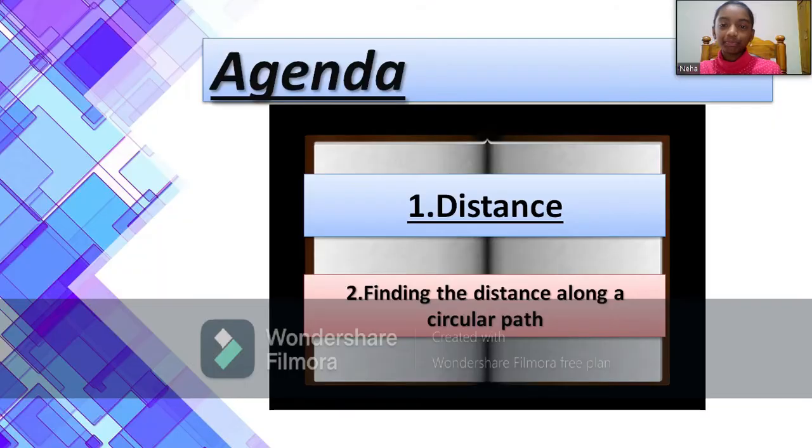What's late? Let's go. So today's agenda: 1. Distance and 2. Finding the distance along a circular path. You may see this sentence confusing, but when you go through this you'll feel it so easy.